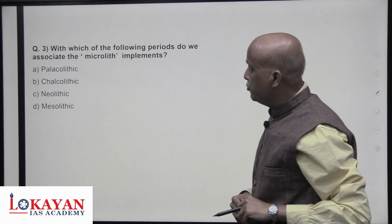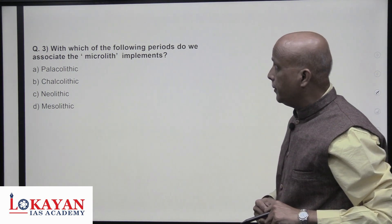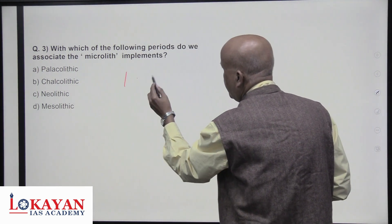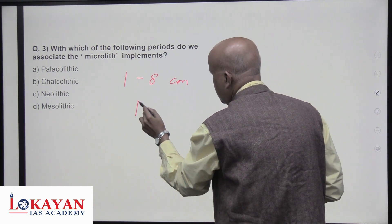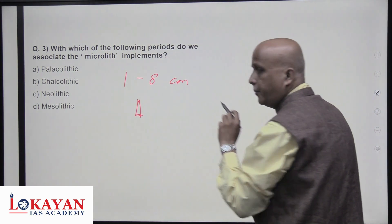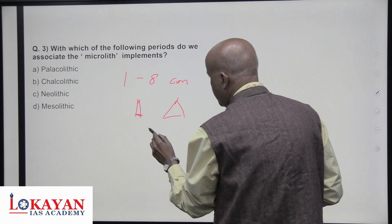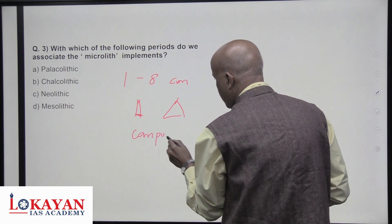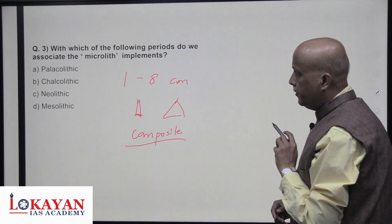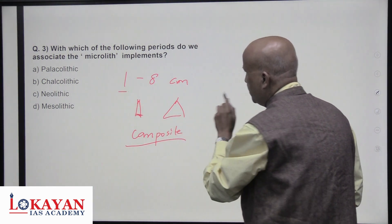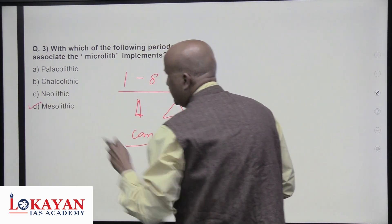Which of the following periods is not associated with microliths? Microliths are small instruments of one to eight centimeters used to kill smaller animals and birds — sometimes used as arrowheads. They are used for composite instruments, meaning they are joined with something else for a better hold. This is the development of the Mesolithic period, so the answer is D.